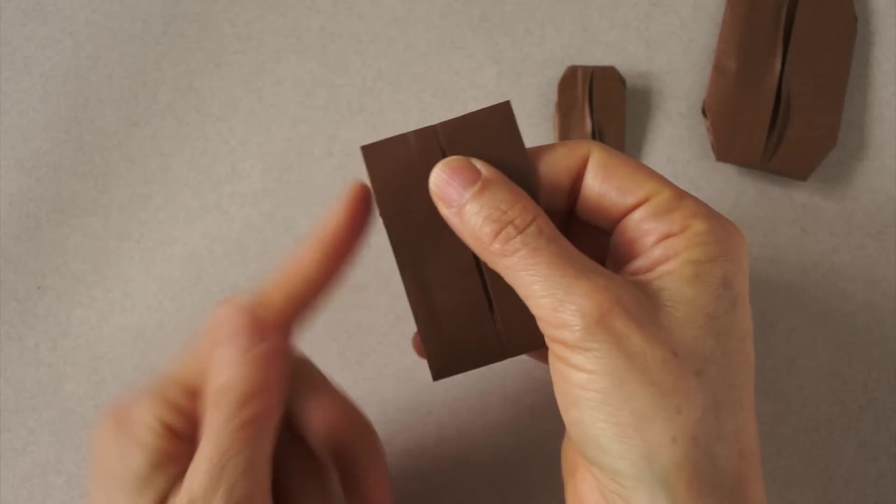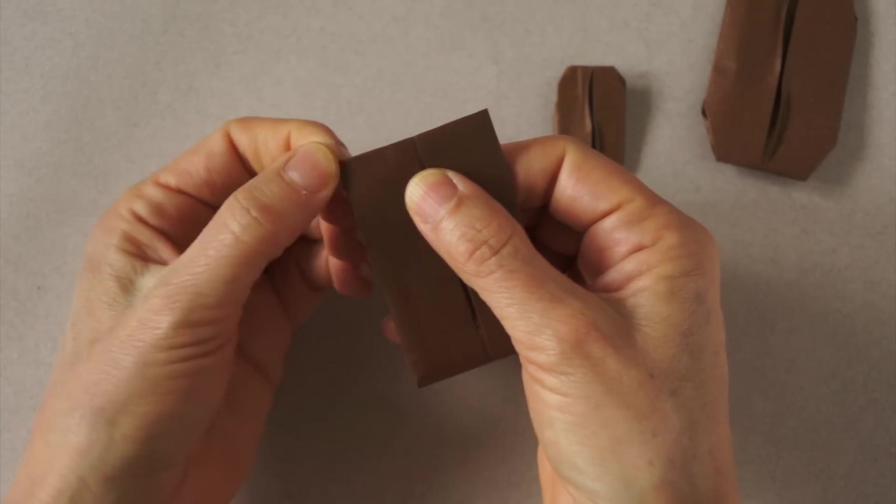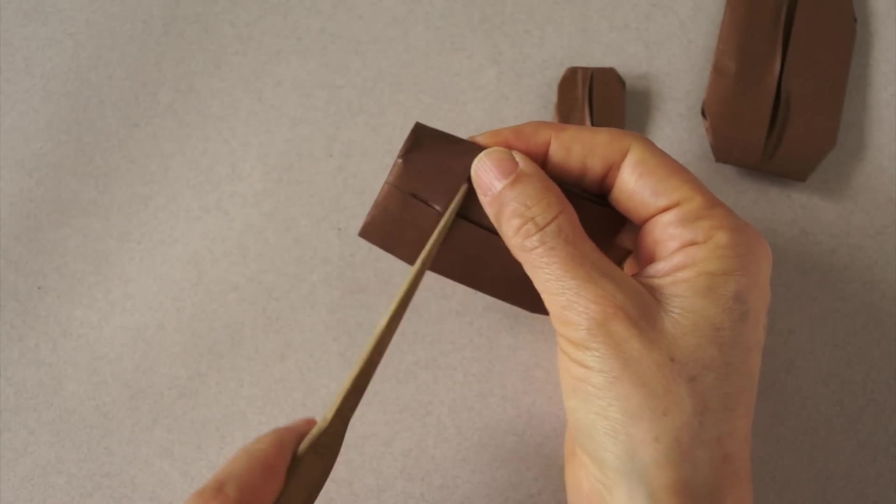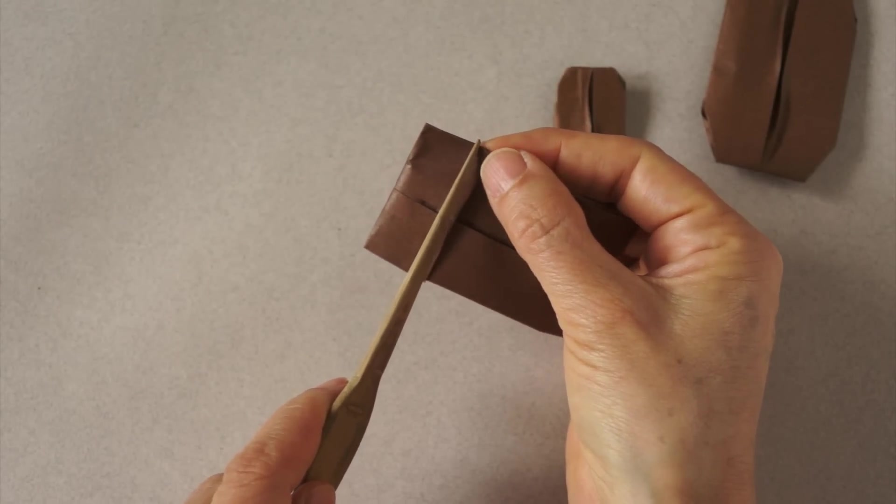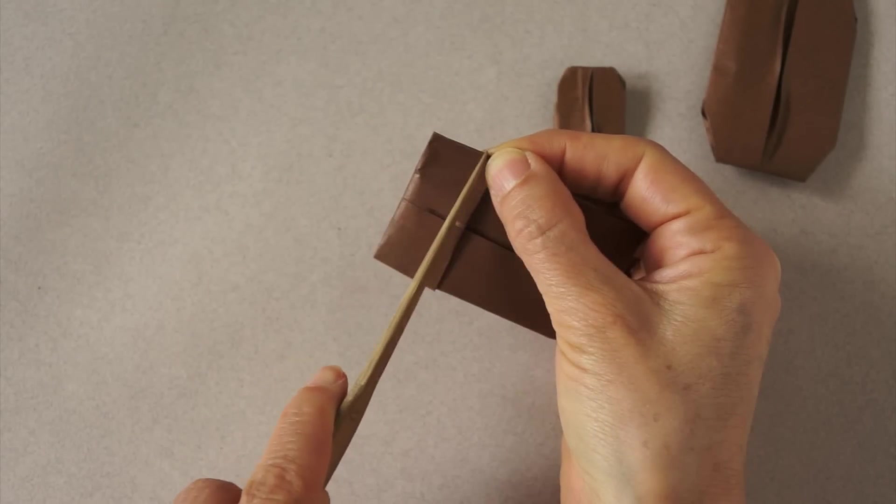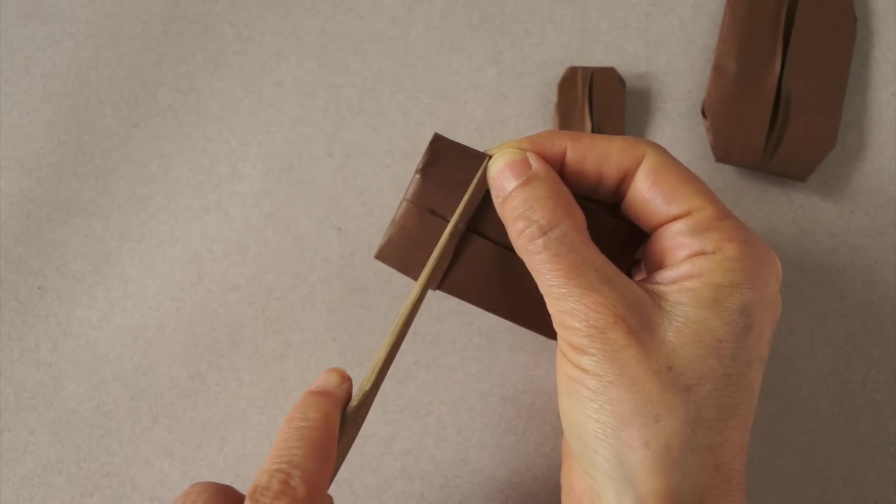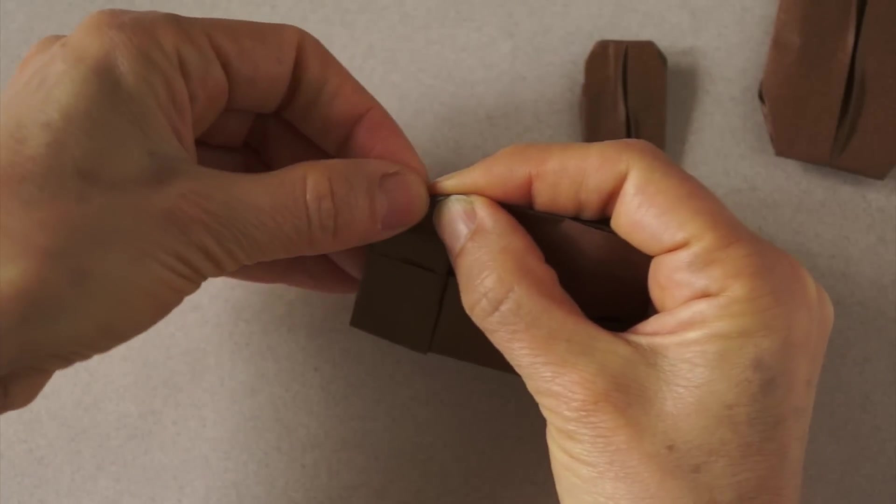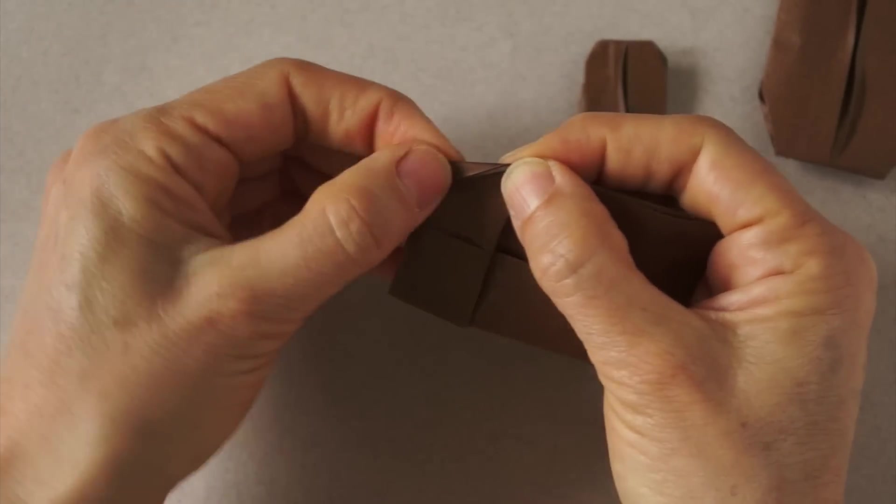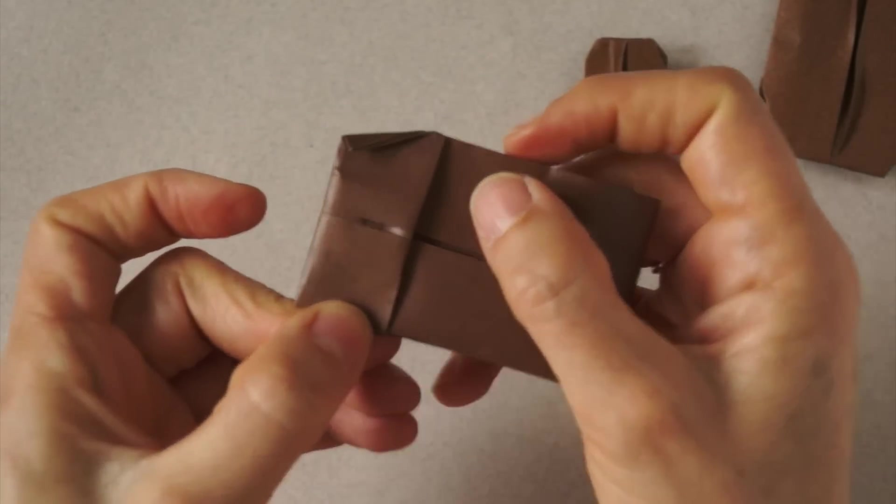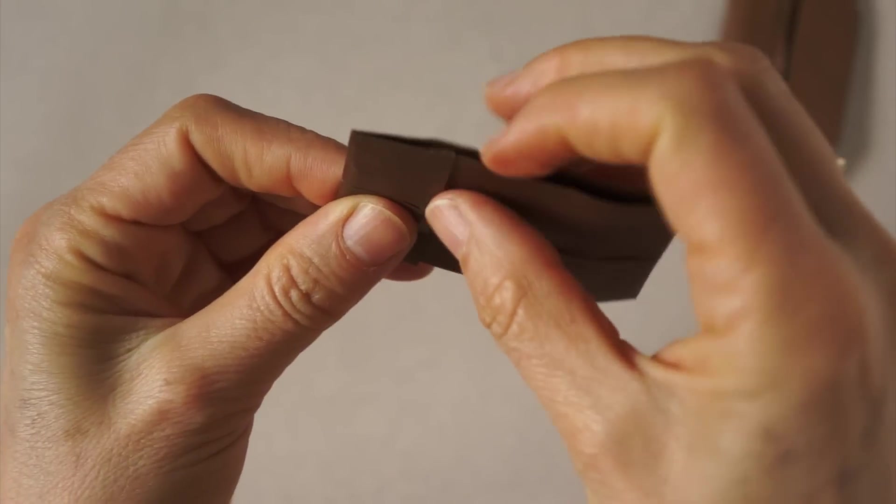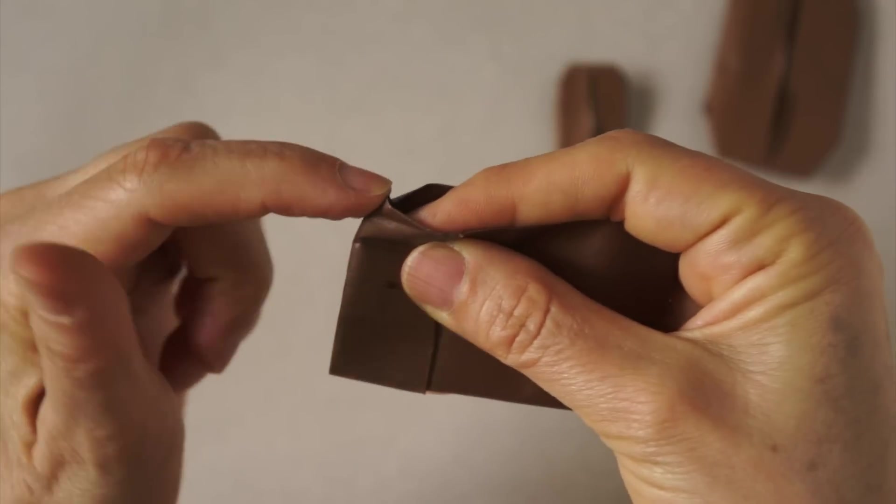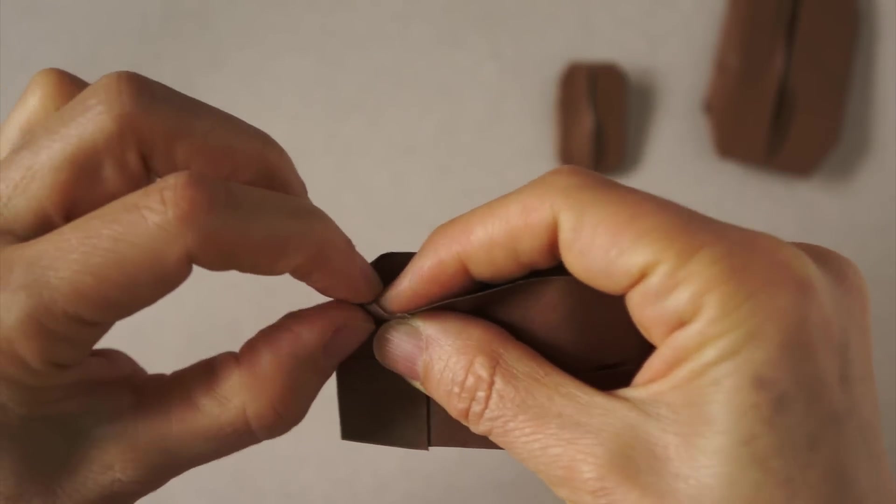Now we are going to round the corners. We are going to make a fold from here. This section will be longer than this. So from here to here, we are going to make a fold over. Then we open for a moment and push and reverse it.